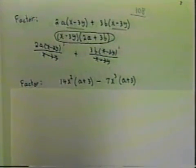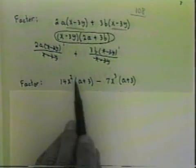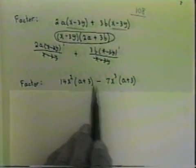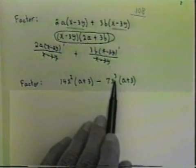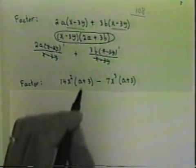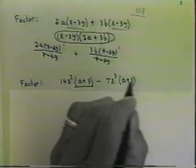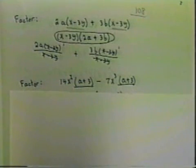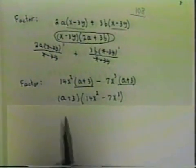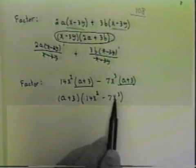Let's look at another example. Let's factor 14x squared times a plus 3 minus 7x cubed times a plus 3. Notice that both of them have an a plus 3 in common. So if I factor the a plus 3 from both of them, I have a plus 3 times 14x squared minus 7x cubed.